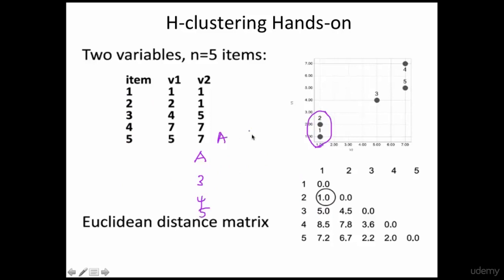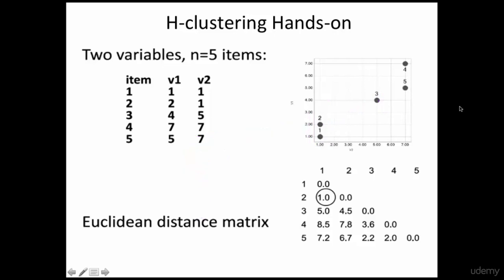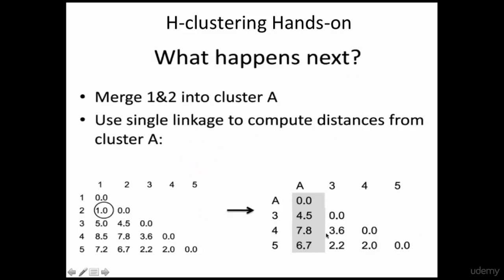Now I have grouped 1 and 2 into Cluster A, so instead of 1 and 2 you have A, and you still have 3, 4, and 5. You need to recalculate the matrix. First, calculate the distance between A and 3. Using single linkage — the closest or nearest neighbor — 2 seems to be closer to 3, so you calculate the distance between 2 and 3. The distances become: A to 3 is 4.5, A to 4 is 7.8, A to 5 is 6.7. Distance between 3 and 4 is 3.6, and between 3 and 5 is 2.2.